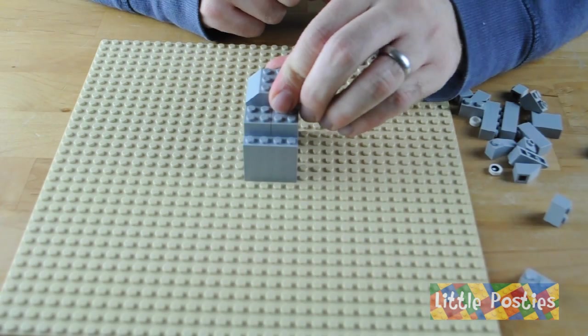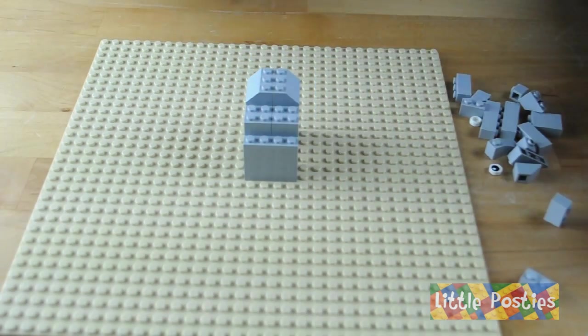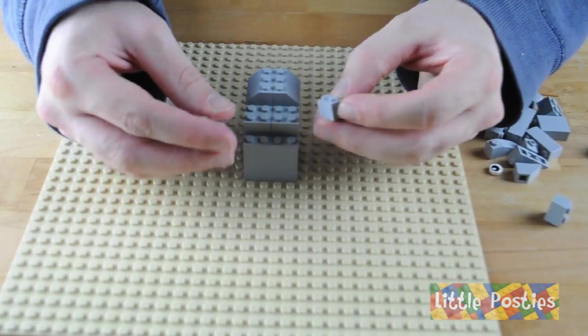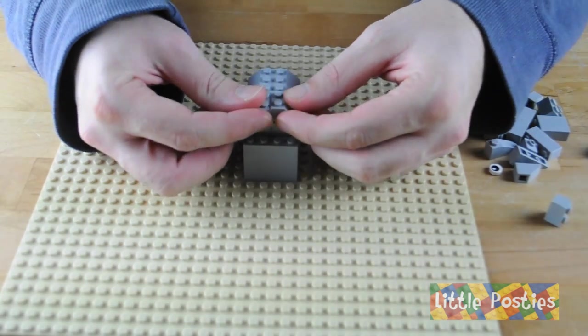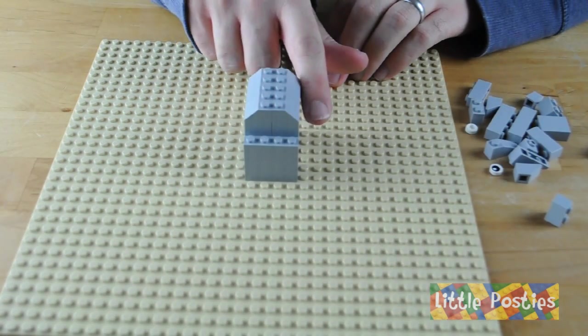Another one, the opposite side. Then grab the 2x2 slopes and that's the body completed at the back.